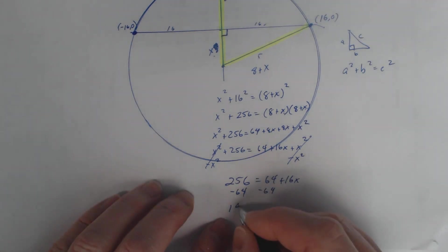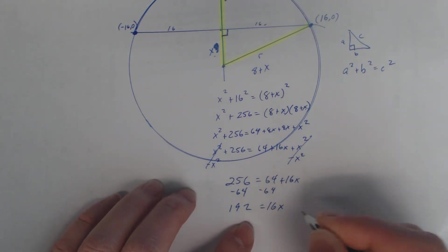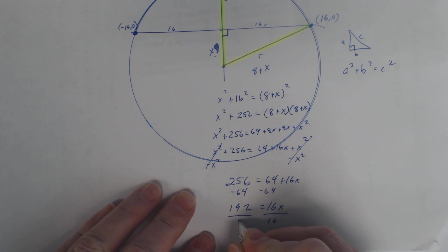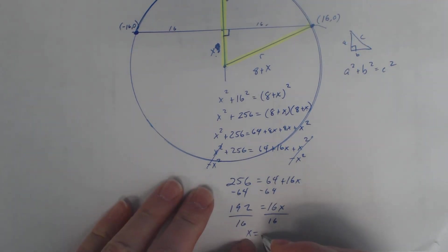256 minus 64... 192 equals 16x. Now we're divided by 16. So divided by 16, divided by 16... 12. I should have known that without a calculator. x is 12.